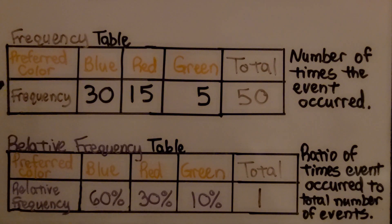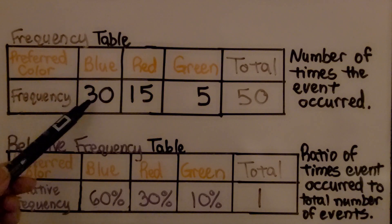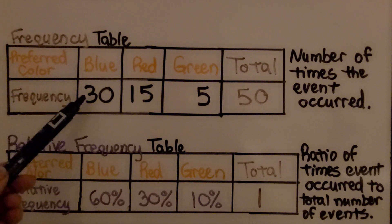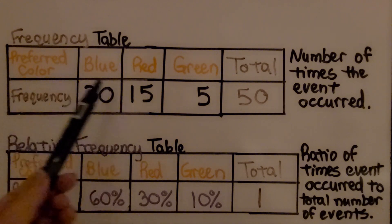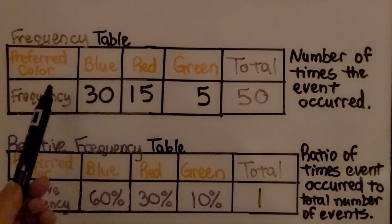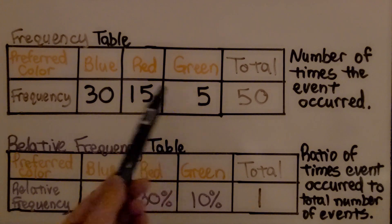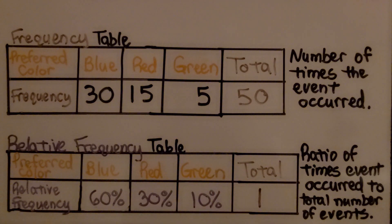This top one is a frequency table. So if people were asked their preferred color of t-shirt and 30 people said blue, that's the frequency of blue. If 15 people said red, that's the frequency of red. And if 5 said green, that's the frequency of green. If we add them all up, it is 50 people that were asked — it's the number of times the event actually occurred.